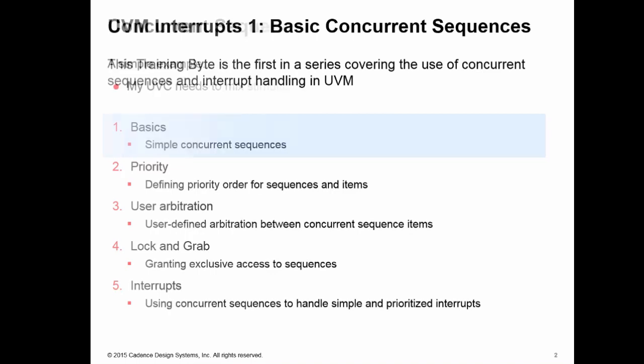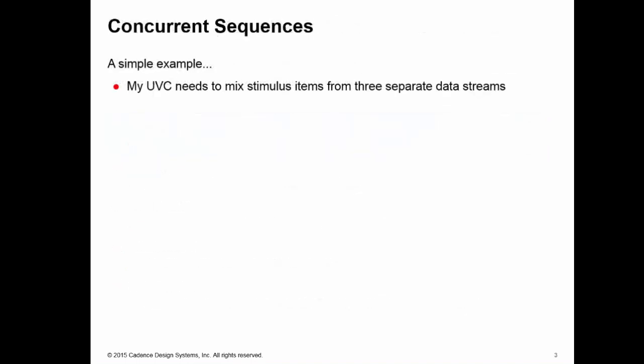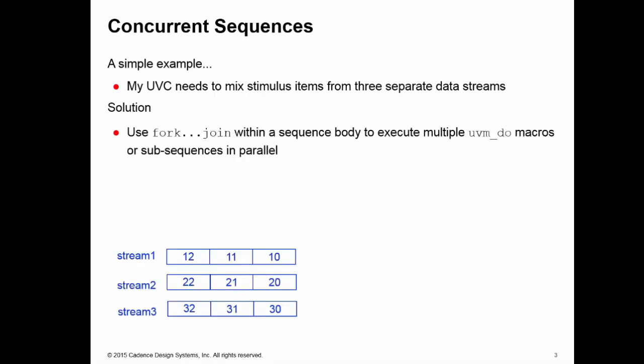We'll start off with a simple example. My UVC needs to create data items from three separate data streams and mix these items on my sequencer and driver. The standard solution for this is to use a fork join within a sequence body to execute multiple do macros or sub sequences in parallel, each block creating a different stream of data. I have three streams here creating different data items.